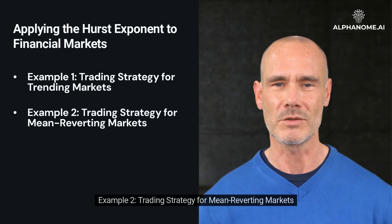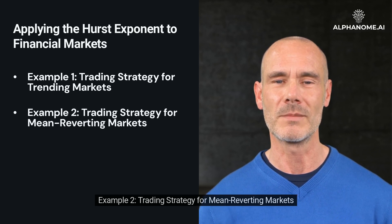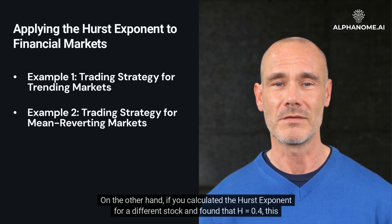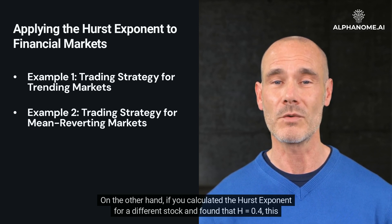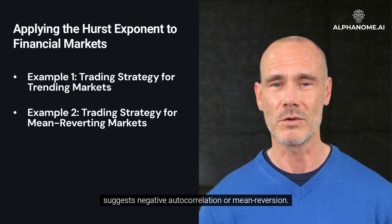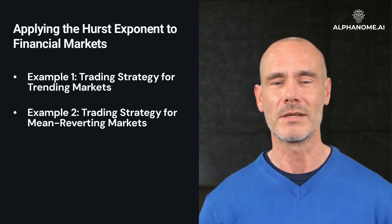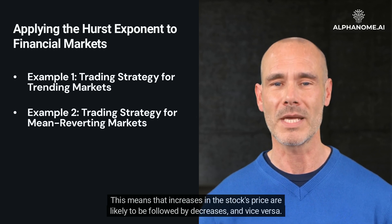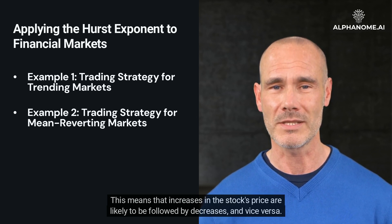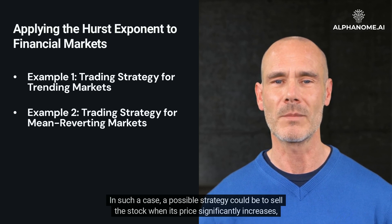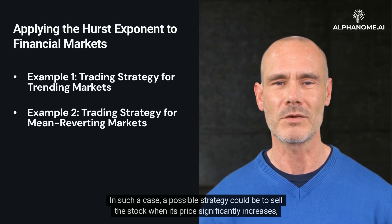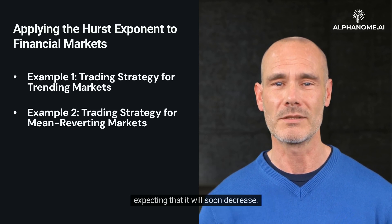Example 2 — Trading Strategy for Mean-Reverting Markets: On the other hand, if you calculated the Hurst Exponent for a different stock and found that H equals 0.4, this suggests negative autocorrelation or mean reversion. This means that increases in the stock's price are likely to be followed by decreases, and vice versa. In such a case, a possible strategy could be to sell the stock when its price significantly increases, expecting that it will soon decrease.